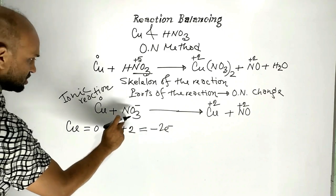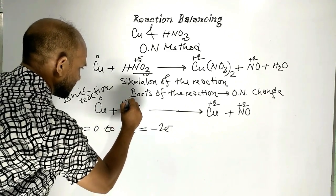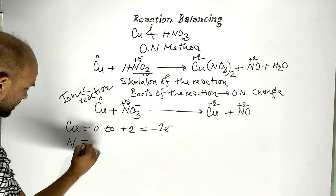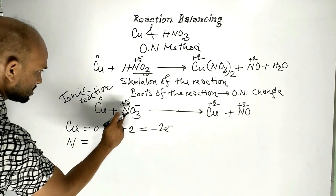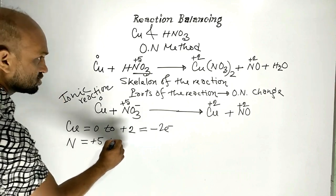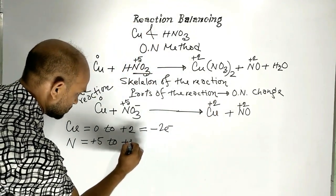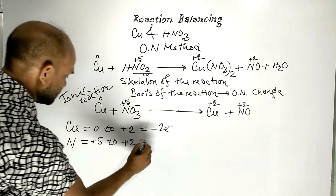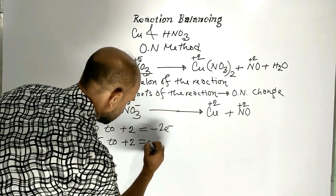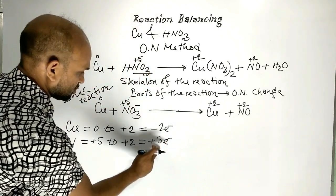On the other hand, the oxidation number of nitrogen goes from plus five to plus two, a change of three. This means nitrogen accepted 3 electrons.